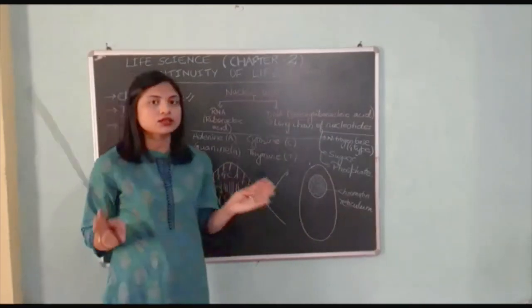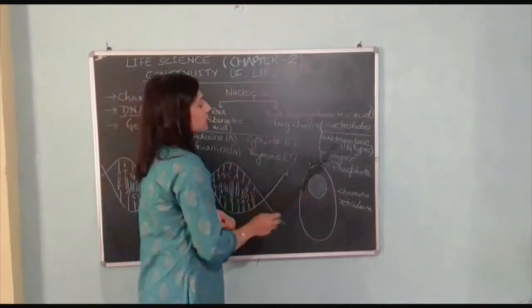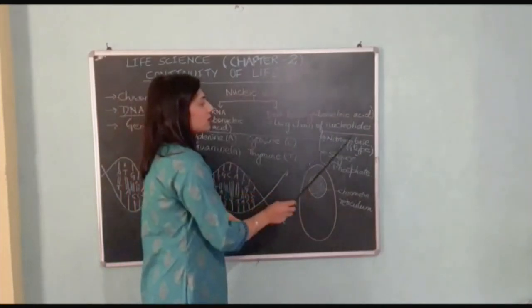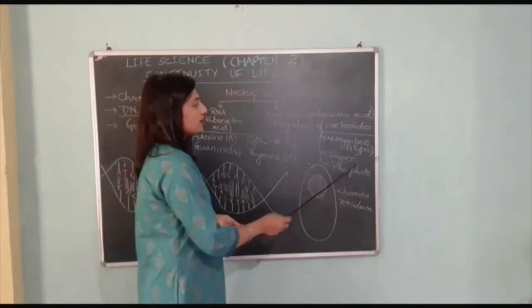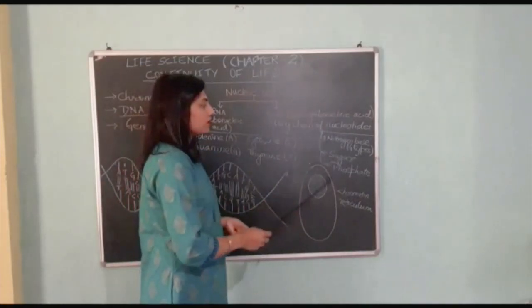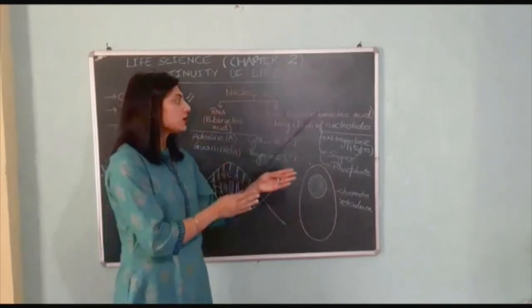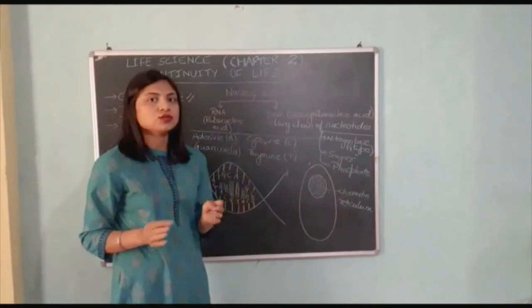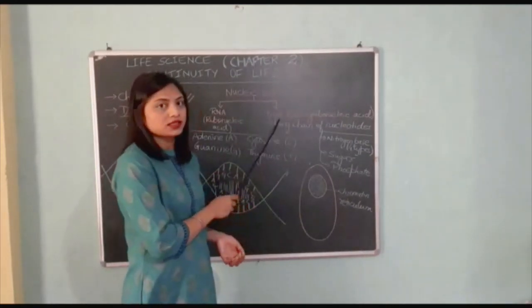Nucleotides are made of what kind of compounds? They are nitrogen base, sugar, and phosphate. So these three compounds together form nucleotides, and many nucleotides join together to form a long chain which is DNA.